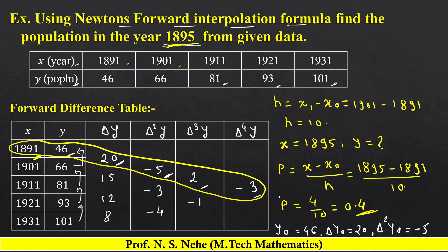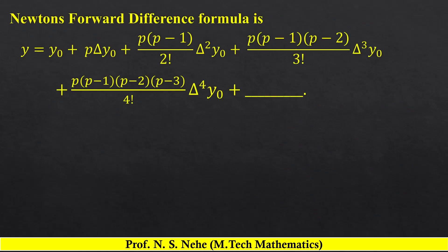Newton's forward interpolation formula है: y = y₀ + p·Δy₀ + [p(p−1)/2!]·Δ²y₀ + [p(p−1)(p−2)/3!]·Δ³y₀ + [p(p−1)(p−2)(p−3)/4!]·Δ⁴y₀ + … यहाँ पर हमारे 4 difference terms हैं, formula write हो चुका है। अब formula में values put up करेंगे और calculations करेंगे।